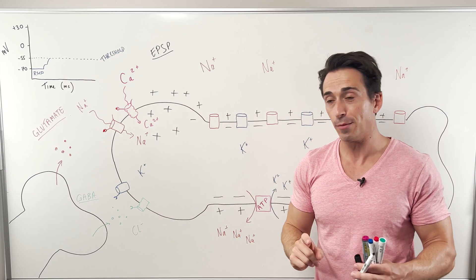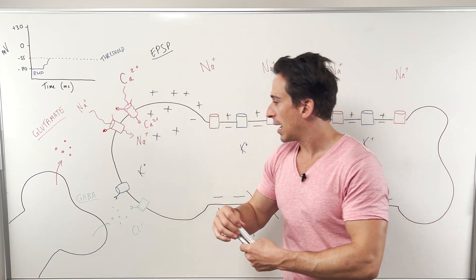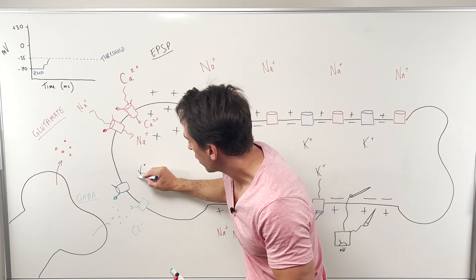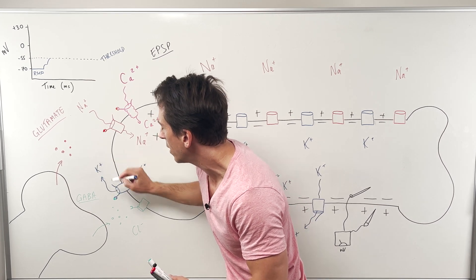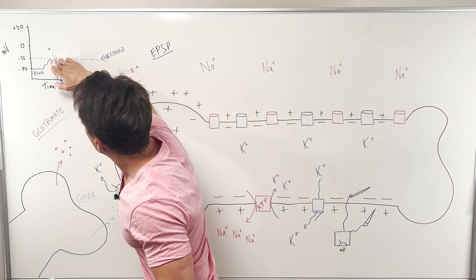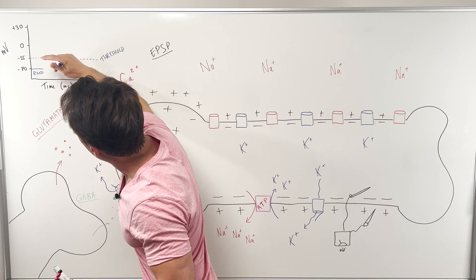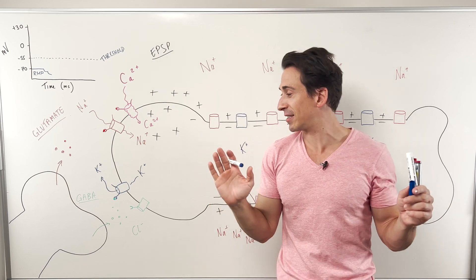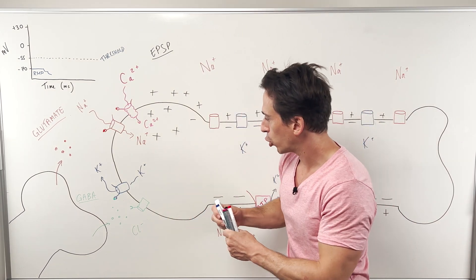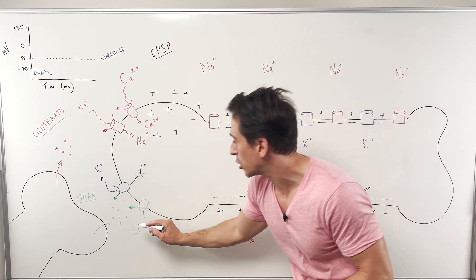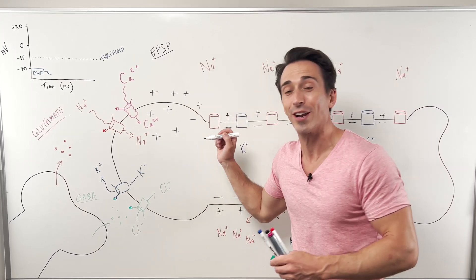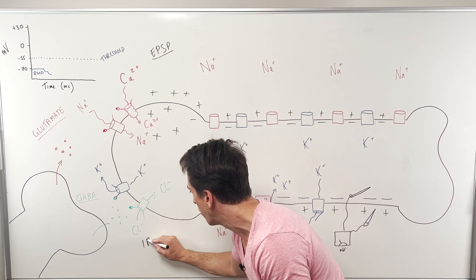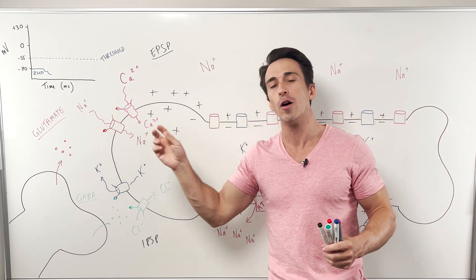Now let's go to GABA, the inhibitory neurotransmitter. When GABA binds to GABA-specific receptors, it might bind to potassium channels, opening them up so potassium goes down its concentration gradient and leaks out, making the inside negative — moving the resting membrane potential down into the negative rather than toward positive. So it's doing the opposite: it's saying don't send a signal. Or GABA can bind to chloride channels, letting chloride diffuse in. Since chloride has a negative charge, it also makes inside negative. This is called an inhibitory post-synaptic potential, or IPSP.